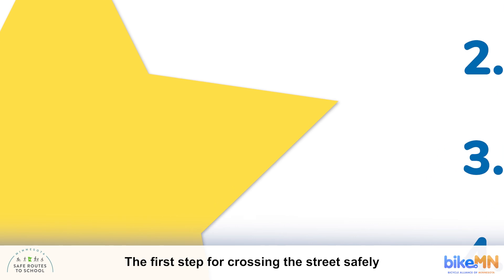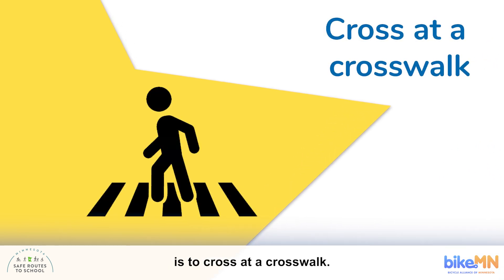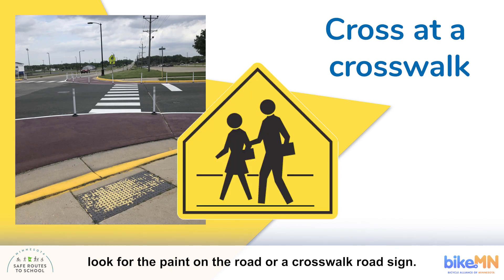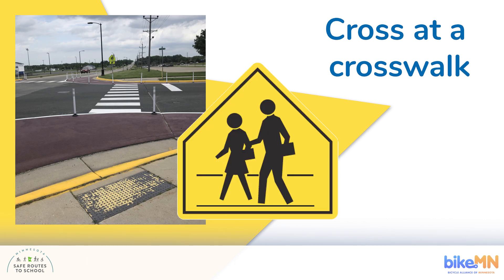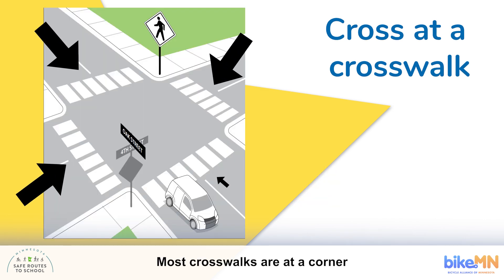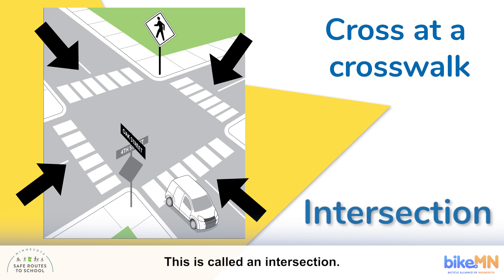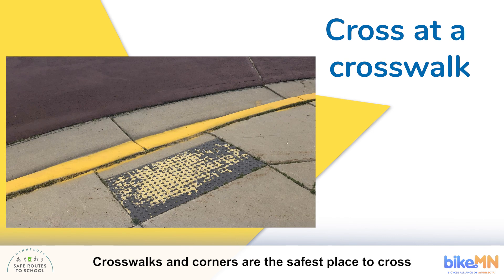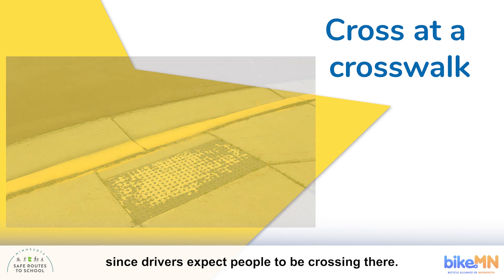The first step for crossing the street safely is to cross at a crosswalk. To find a crosswalk, look for the paint on the road or a crosswalk road sign. Most crosswalks are at a corner where two streets come together — this is called an intersection. If you can't find a crosswalk, try to find a corner. Crosswalks and corners are the safest place to cross since drivers expect people to be crossing there.